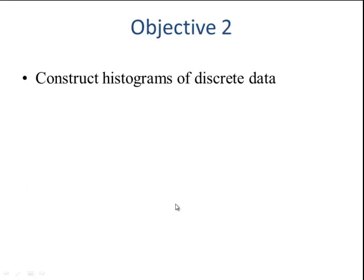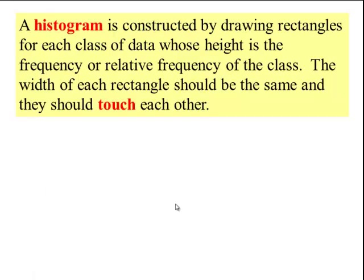Let's look at objective number two: histograms. A histogram is constructed by drawing rectangles. Sometimes those rectangles are called bins for each class of the data whose height is the frequency, or it can even be relative frequency of the class. The width of each rectangle should be the same, and they should touch each other.